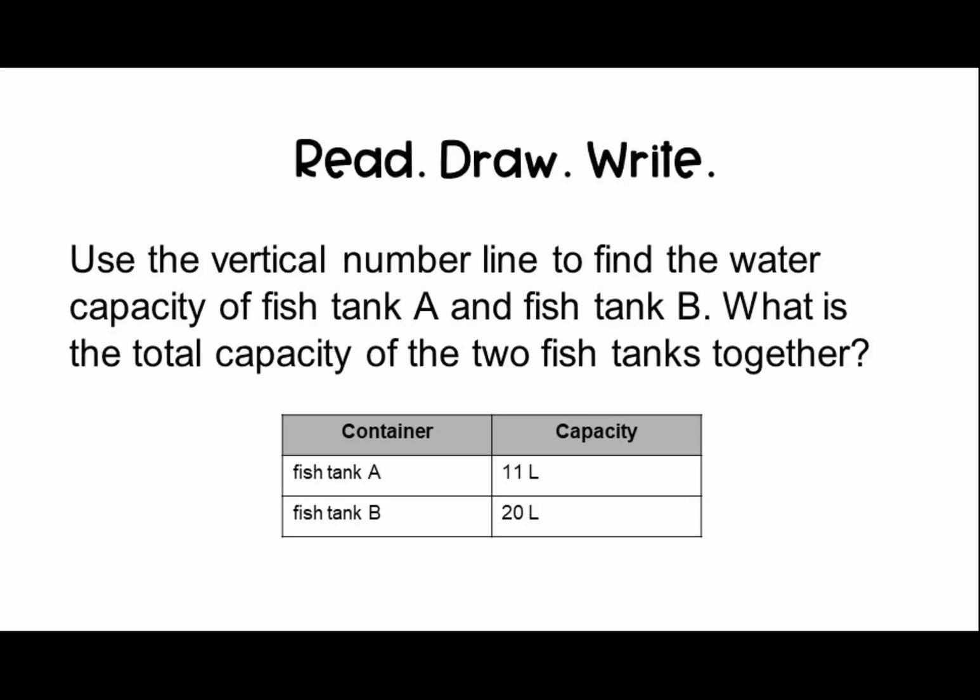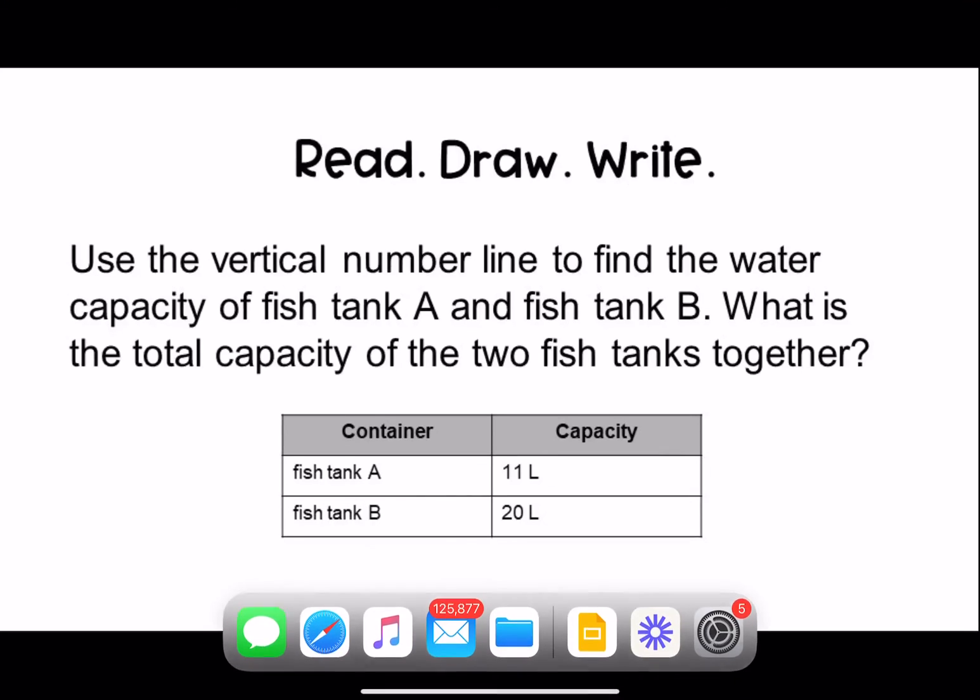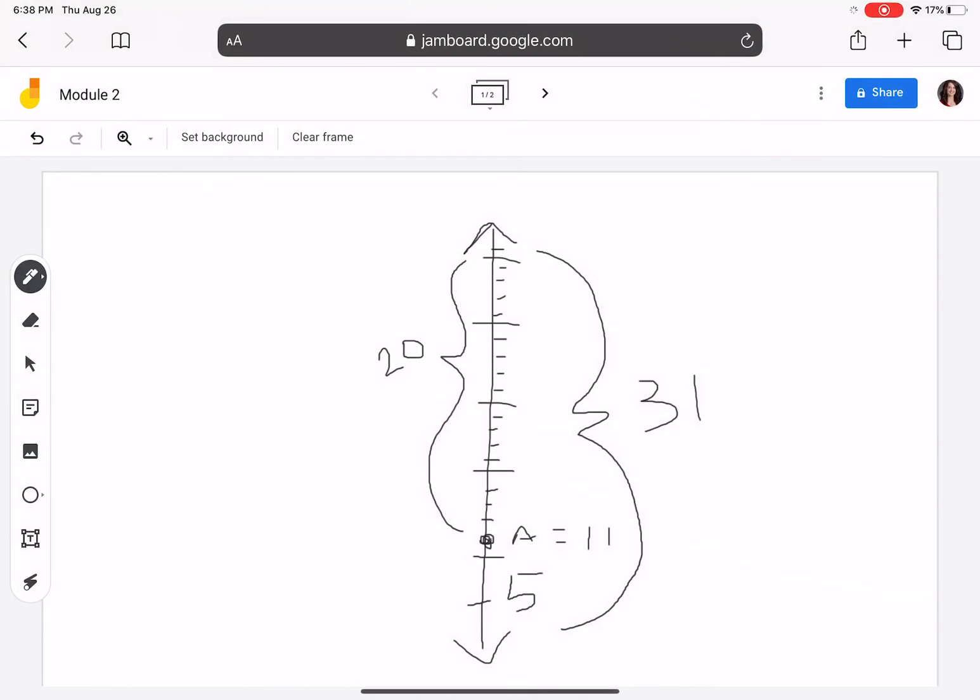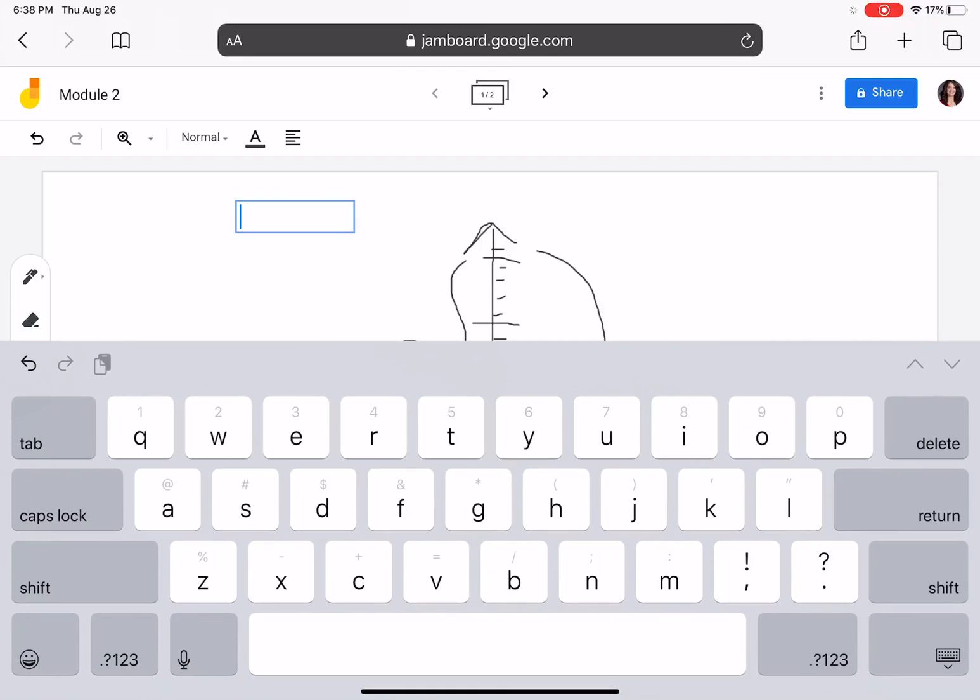Now it's time to write a sentence to answer our question. We want to use information from the question in our answer. Again, the question is, what is the total capacity of the two fish tanks together? I'm going to say the total capacity is 31 liters.